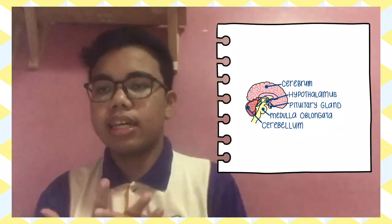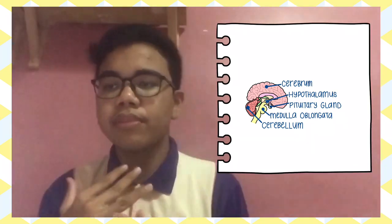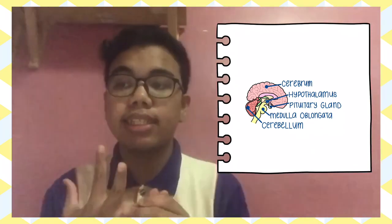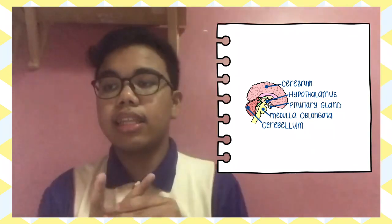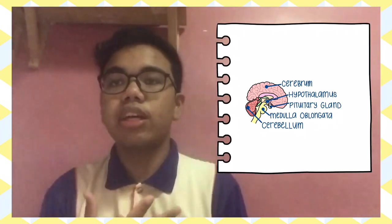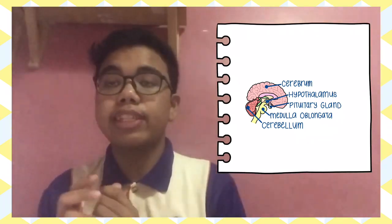In the brain we have 5 components. The first component is the Cerebrum. Then we have the Hypothalamus, Cerebellum, Medulla Oblongata, and Pituitary gland.